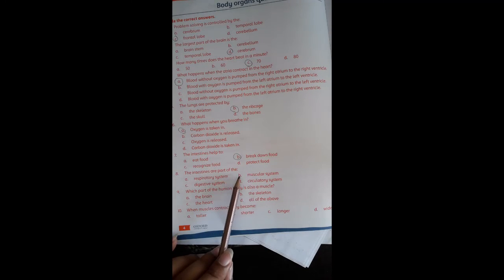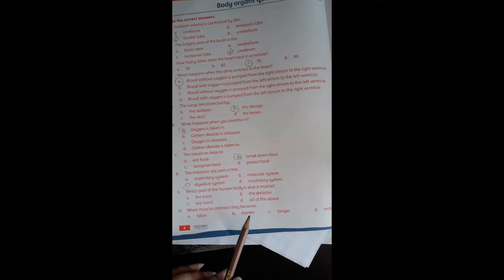Intestines are the part of the digestive system. Which part of the body also has muscles? Brain, skeleton, muscles, heart and muscles. When muscles contract, they become shorter.